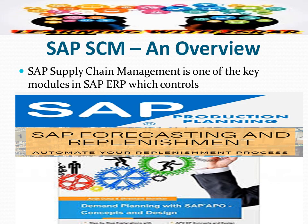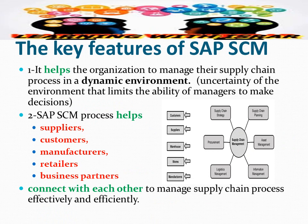SAP Supply Chain Management is one of the key modules in SAP ERP, which basically controls production planning, business forecasting, and demand planning in supply chain management. It helps the organization to manage their supply chain process in a dynamic — meaning uncertain — environment, where it limits the ability of managers to make decisions, but SAP helps make decisions that optimize the supply chain process.